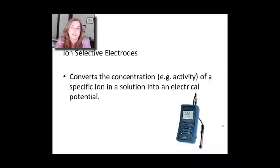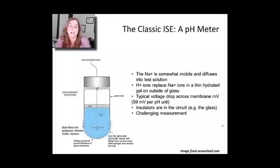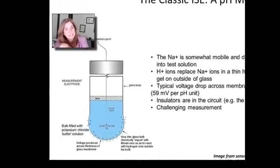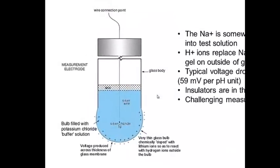An ion-selective electrode will convert the concentration of an analyte in solution into a known electrical potential. The classic ion-selective electrode is the pH meter. Over here to the left is a picture of the pH meter. You might have used one before. They're very delicate. They have these glass bulbs on the end that can easily break because they're very thin.